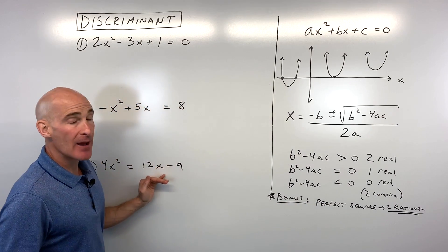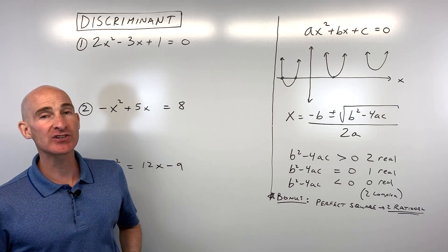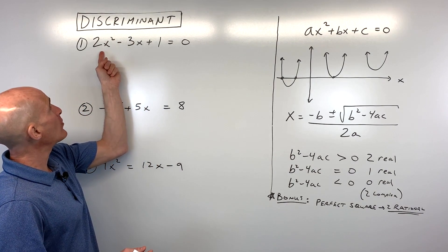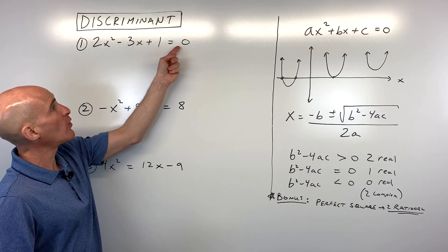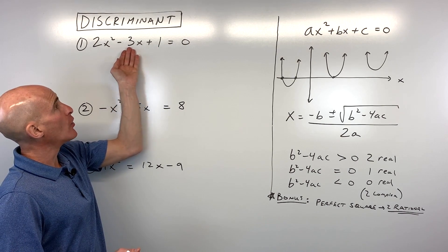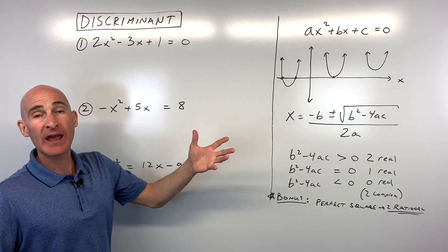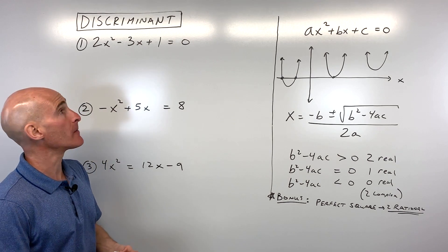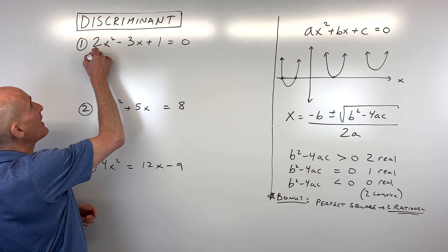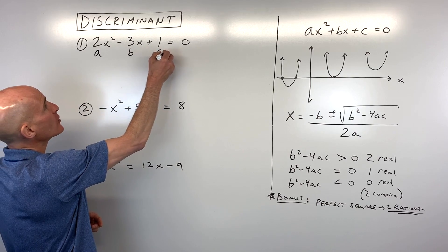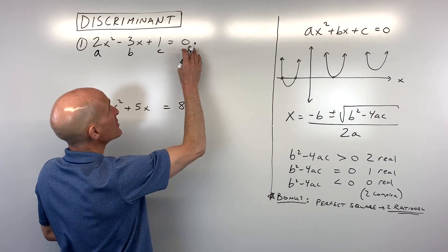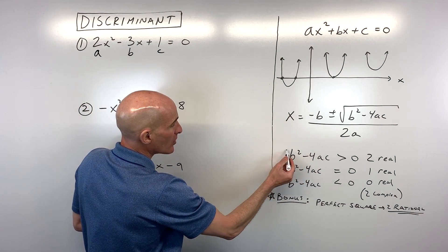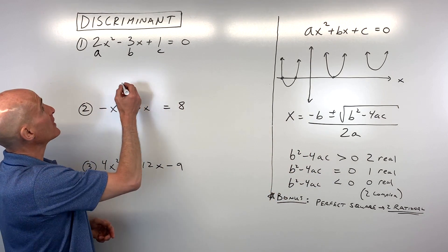Let's do three examples, and then there's a fourth example that's more challenging — if these first ones are easy, go ahead and skip to that fourth question. In number one, we have 2x squared minus 3x plus 1 equals 0. We want to find out how many solutions there are and whether they're real or imaginary. The first thing we want to identify is the a value, the b value, and the c value — making sure everything's on one side and set equal to zero. Then we substitute into the discriminant, b squared minus 4ac.